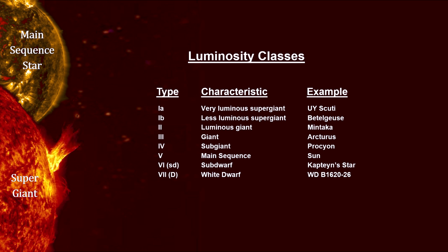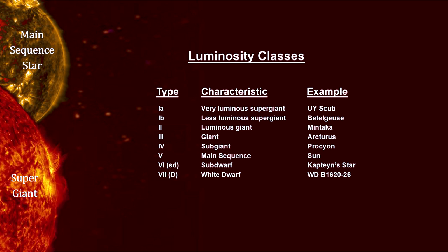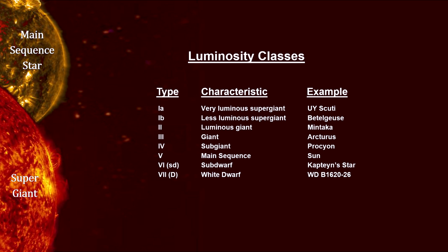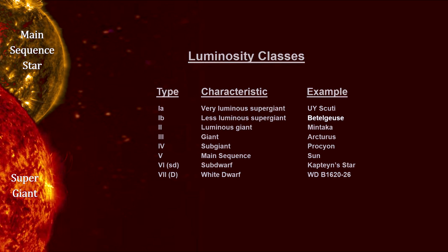Roman numerals are used to identify luminosity classes. Our Sun is class 5, a main sequence star.